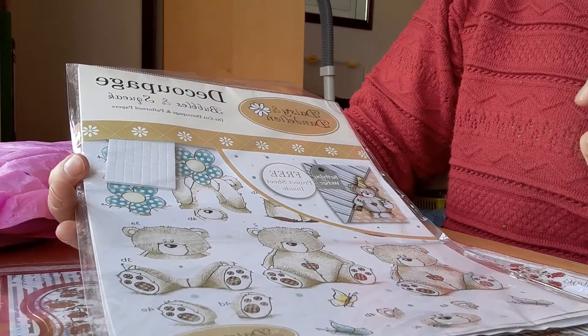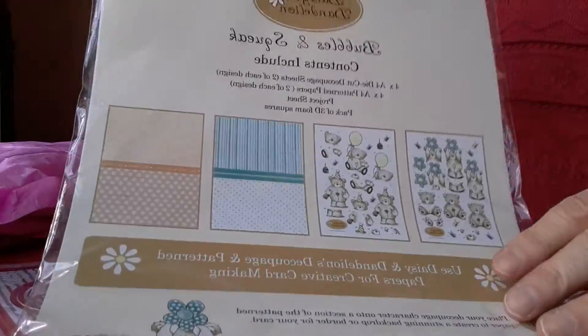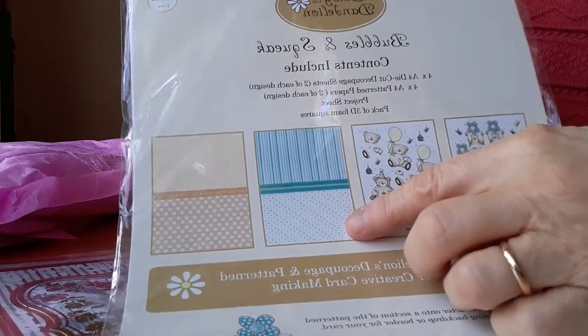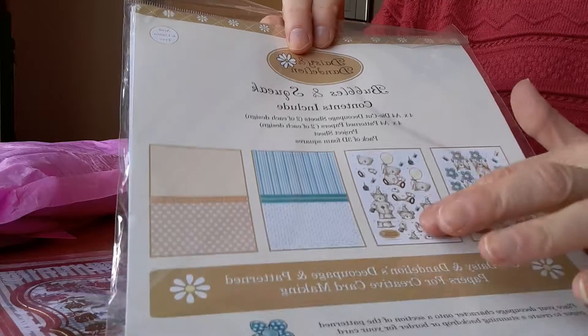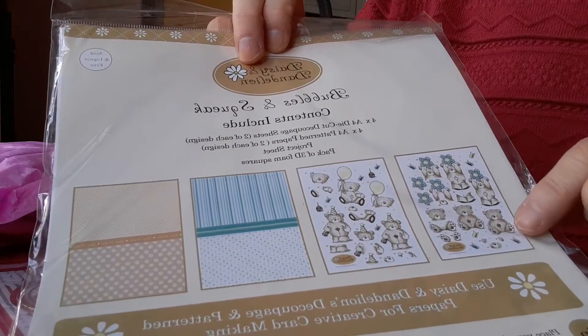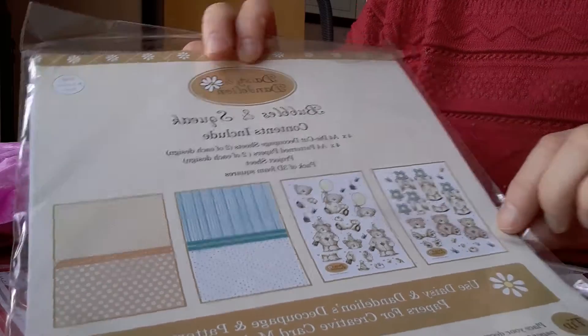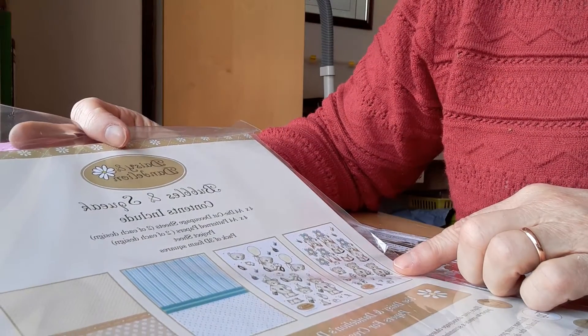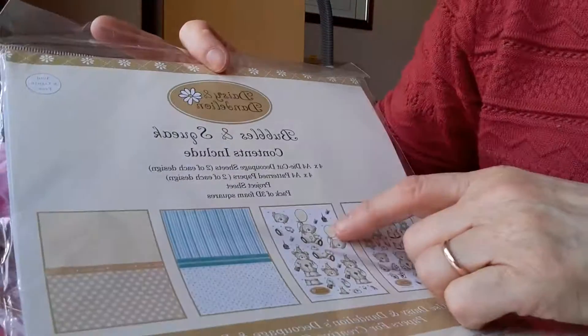Then she also sent me this decoupage kit of Bubbles and Squeak and Daisy and Dandelion. There are four cards here to make up. I think here you can see the contents better. There's these two pieces of backing card.